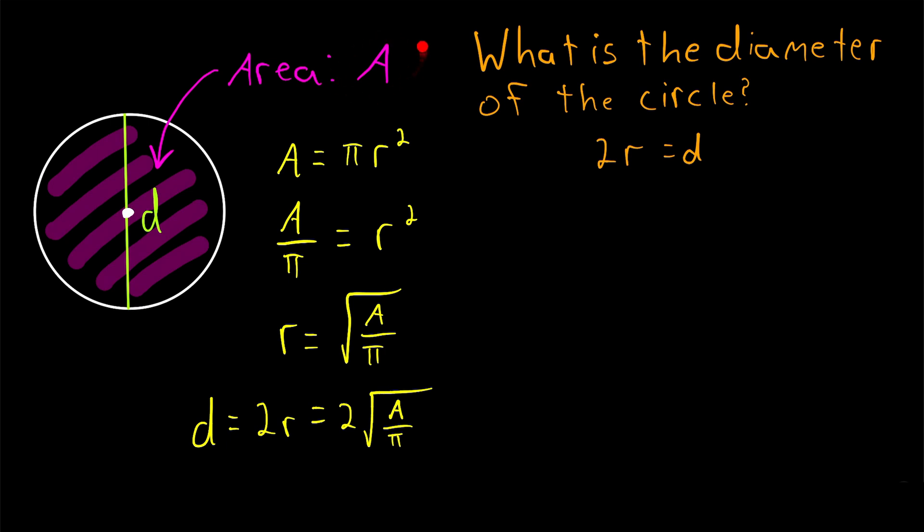So if we're given the area of a circle, a, just divide it by pi and take the square root, that is the radius. Then just multiply it by 2, and that's the diameter.